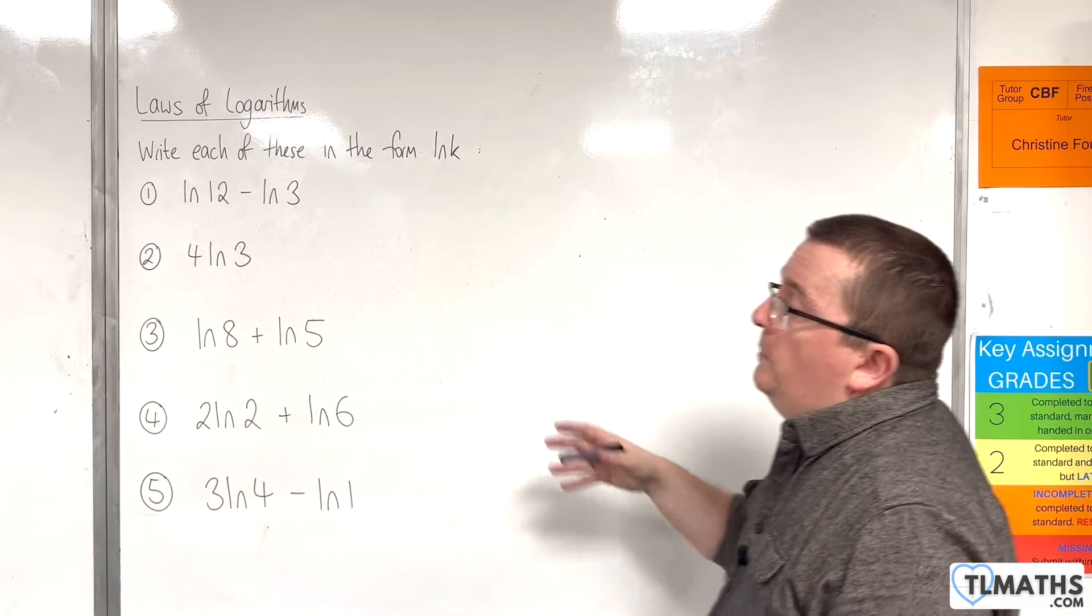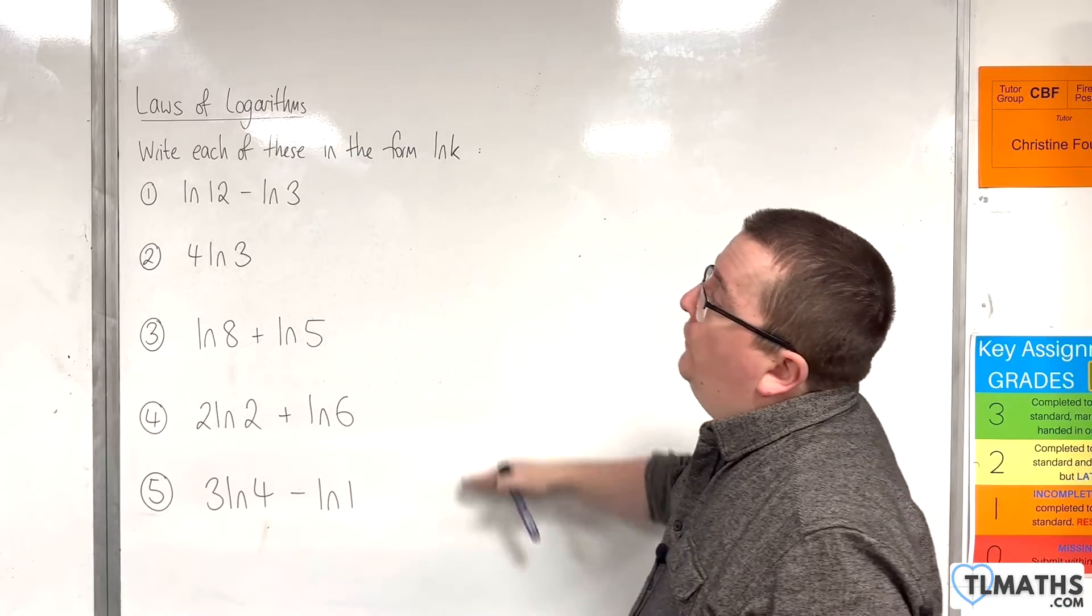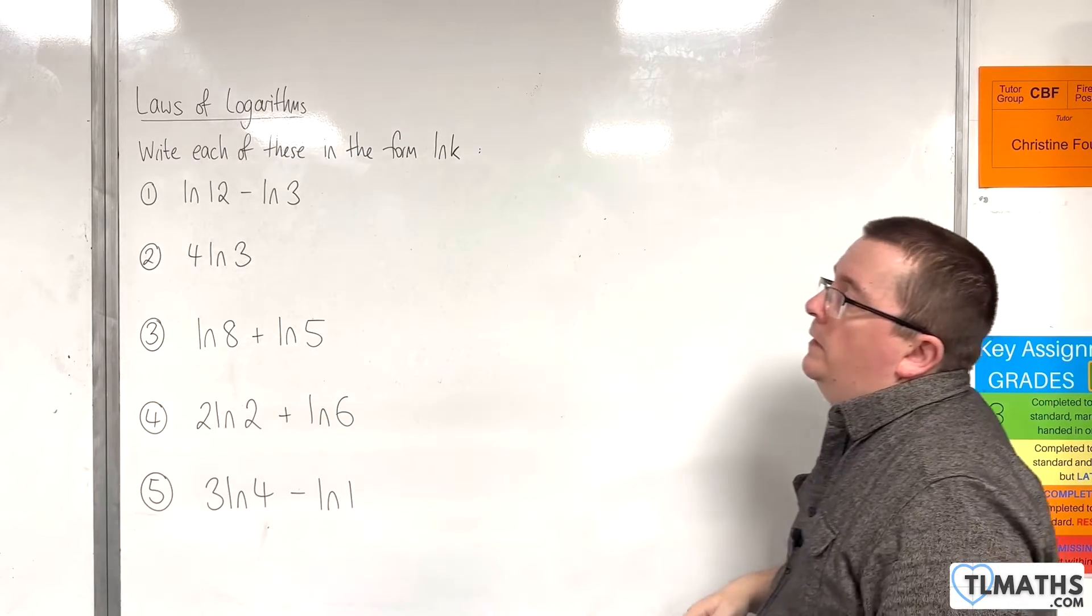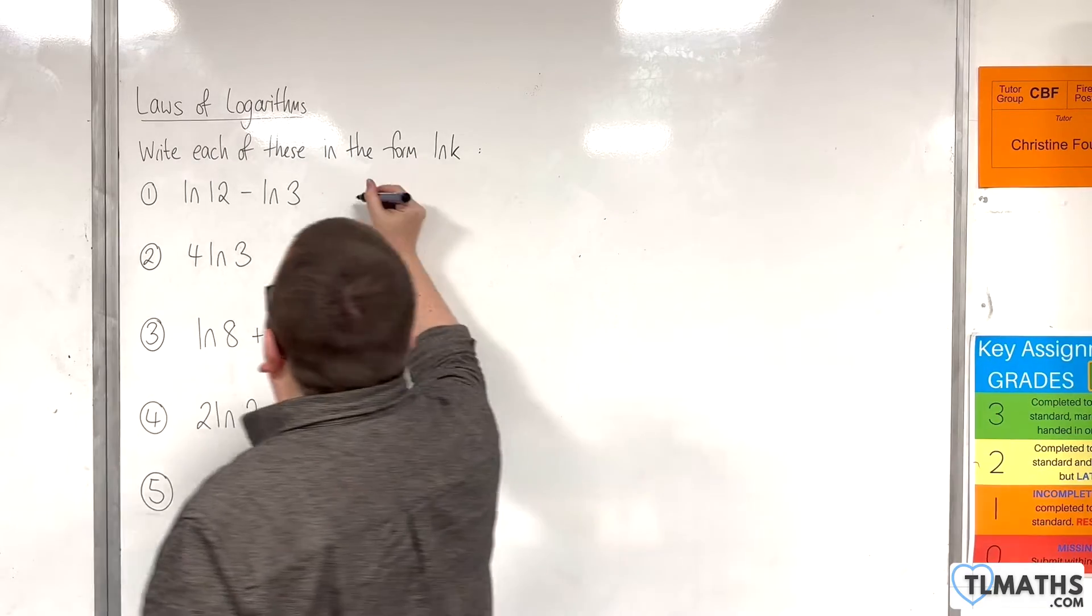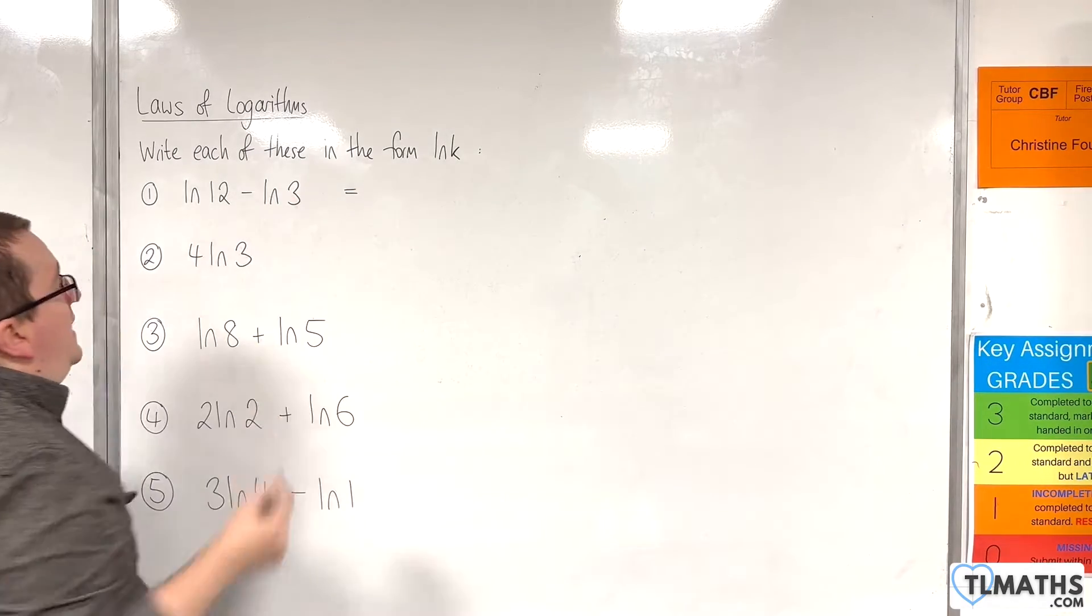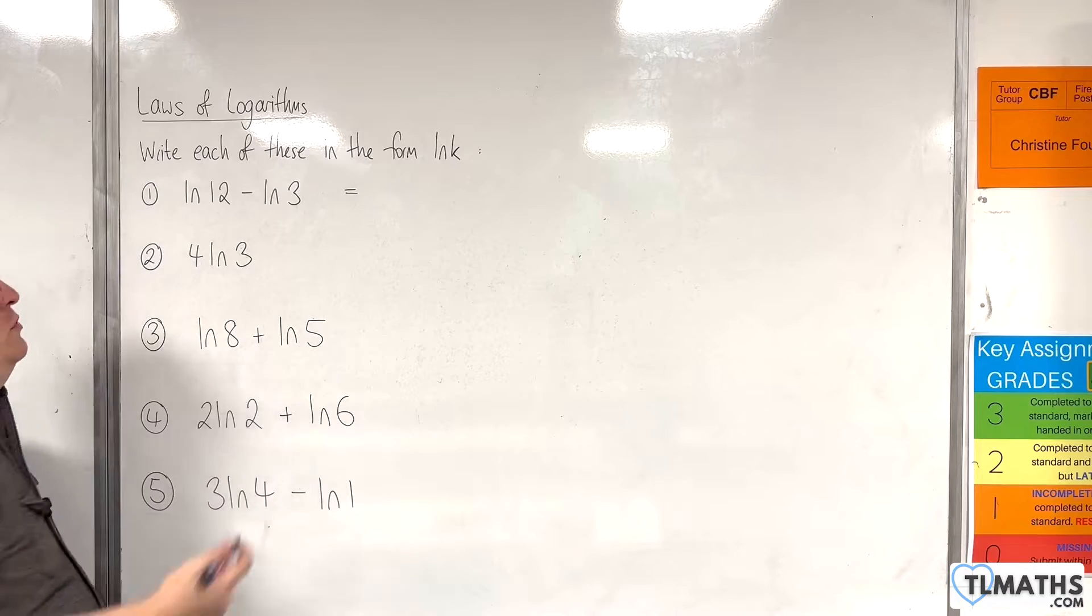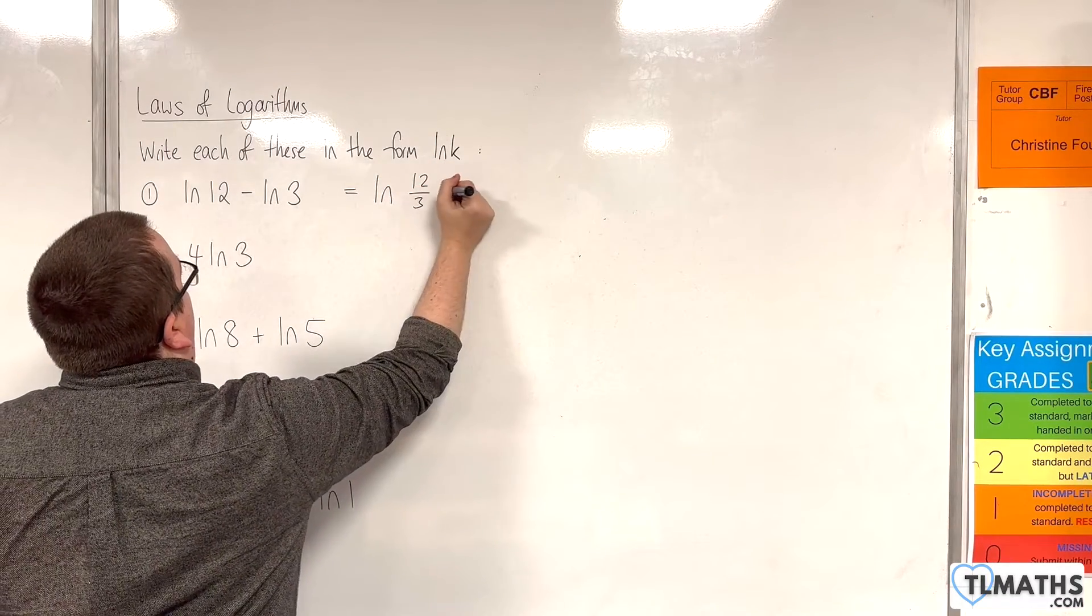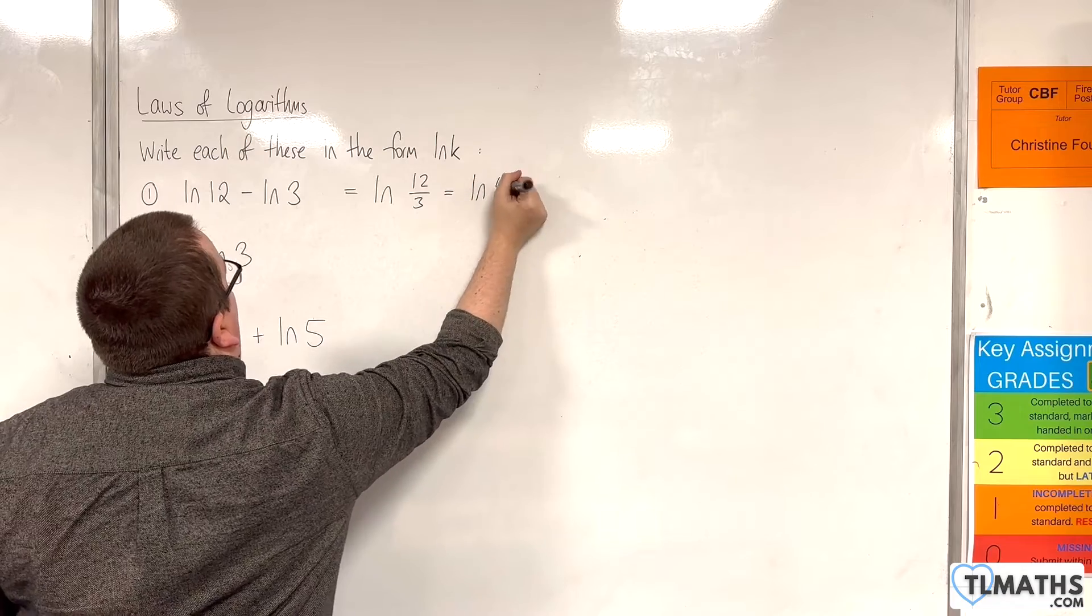In this video I want to go through some examples of writing each of these in the form log of k, the natural logarithm of k. For our first example, natural log of 12 take away natural log of 3, we can use the quotient rule to write that as the natural log of 12 over 3, which is the natural log of 4. So in this case k equals 4.